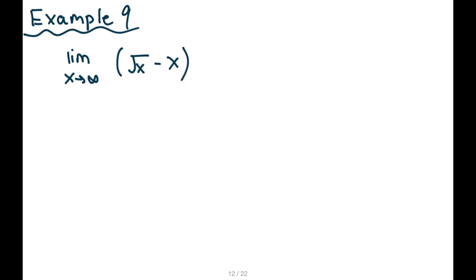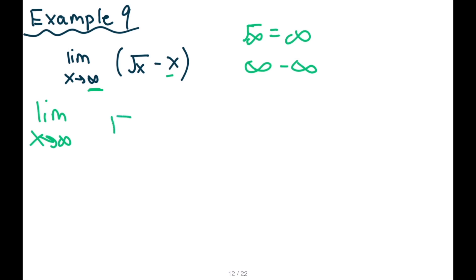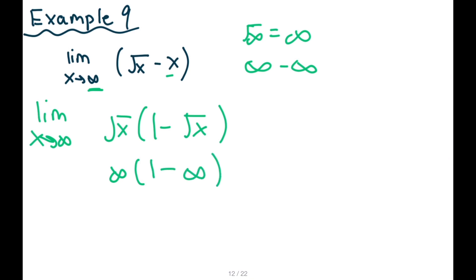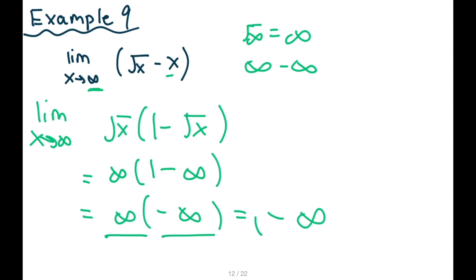Question nine: another infinity question. Substituting: square root of infinity is still infinity, and infinity minus infinity is an indeterminate form. So let's factor: limit as x goes to infinity — take out √x to get √x(1 − √x). Plug infinity back in: infinity times (one minus infinity) — one minus infinity is negative infinity. Infinity times negative infinity is negative infinity. The answer is negative infinity.